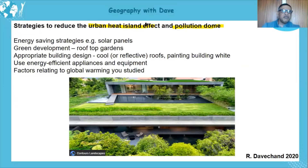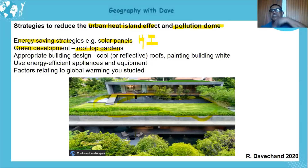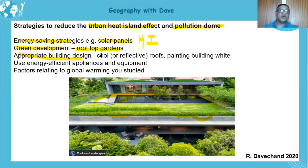Now for strategies to reduce the urban heat island effect and pollution dome — I'm linking them together. Energy-saving strategies such as solar panels reduce the heat island effect by making the area cooler and reducing pollution from burning coal. Green development like rooftop gardens — where vegetation sits on top of buildings — provides transpiration that cools the area, absorbs carbon dioxide, and helps reduce the heat island effect.